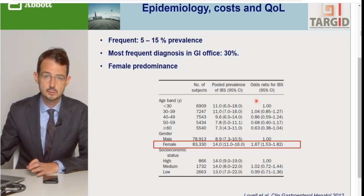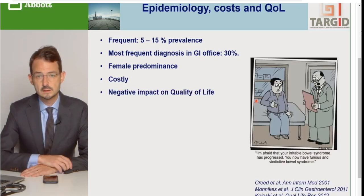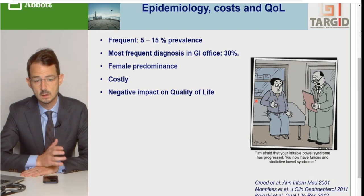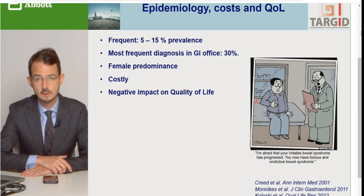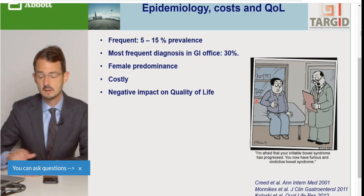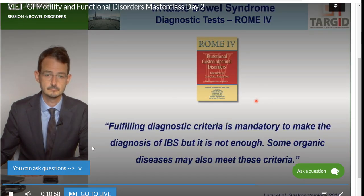Ưu thế nhiều hơn là nữ, thường là nhóm phụ nữ trẻ và những phụ nữ mà cần phải đi khám bác sĩ. Cũng tốn kém lắm, không những là do các lần đi khám bác sĩ, điều trị và y khoa, mà còn do những chi phí gián tiếp như ảnh hưởng tới công việc làm. Và ngoài ra, nó còn có tác động tiêu cực đối với chất lượng cuộc sống. Mình không có bị chết, bị tử vong do IBS. Tuy nhiên, có những bệnh nhân thì triệu chứng nó nặng tới nỗi có thể ảnh hưởng xấu tới chất lượng cuộc sống và xã hội của họ.